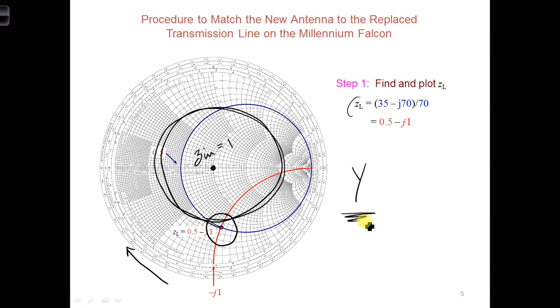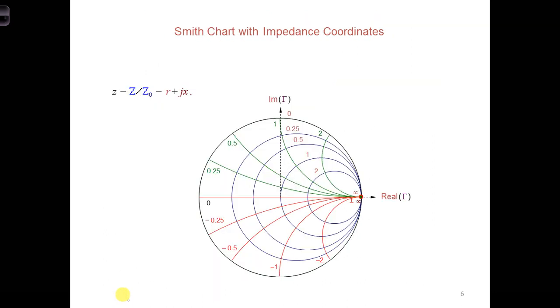Now fortunately, we can transform our Smith chart into a chart of admittances. Here's the Smith chart we've been using so far. It's a Smith chart with impedance coordinates, Z is R plus jX.